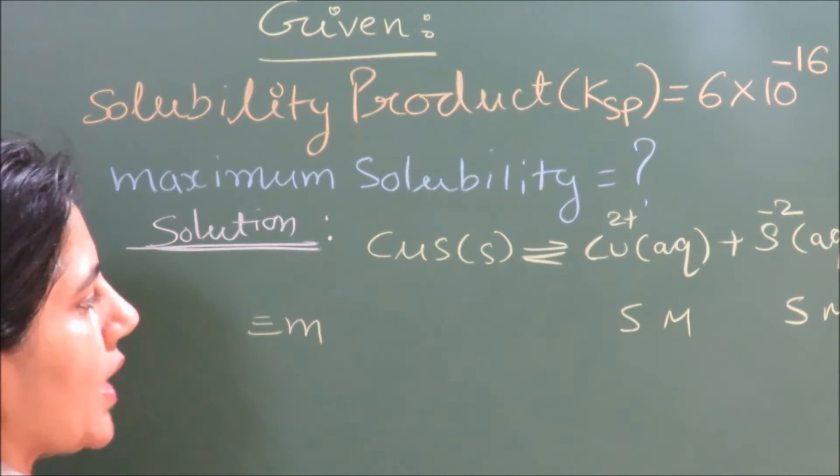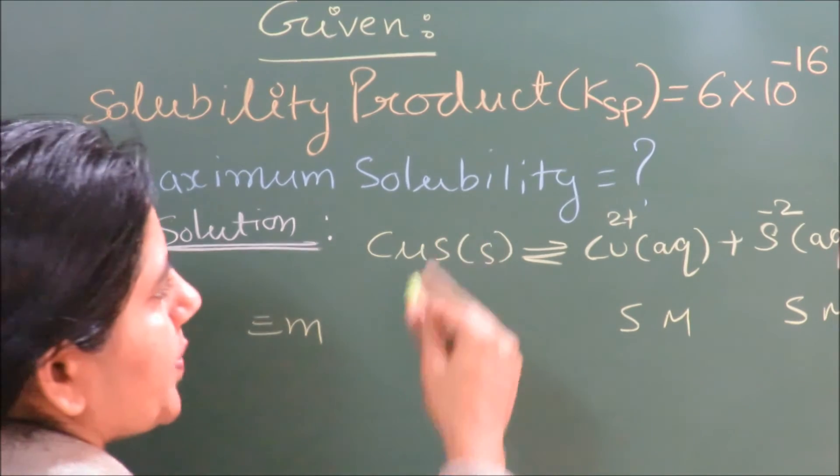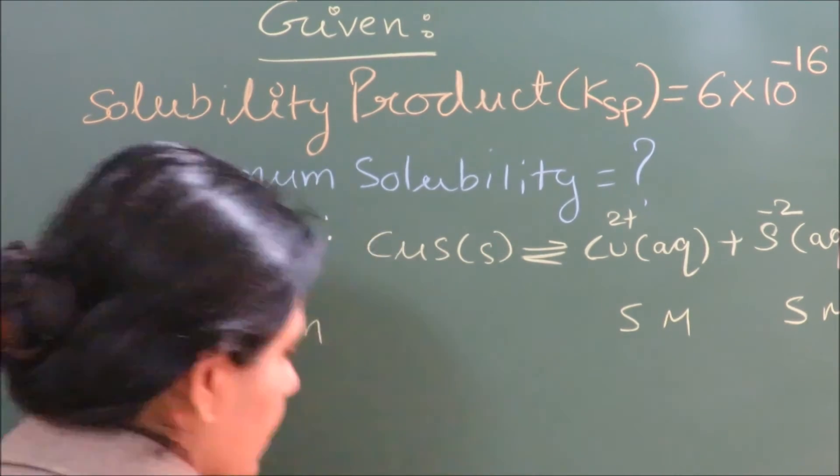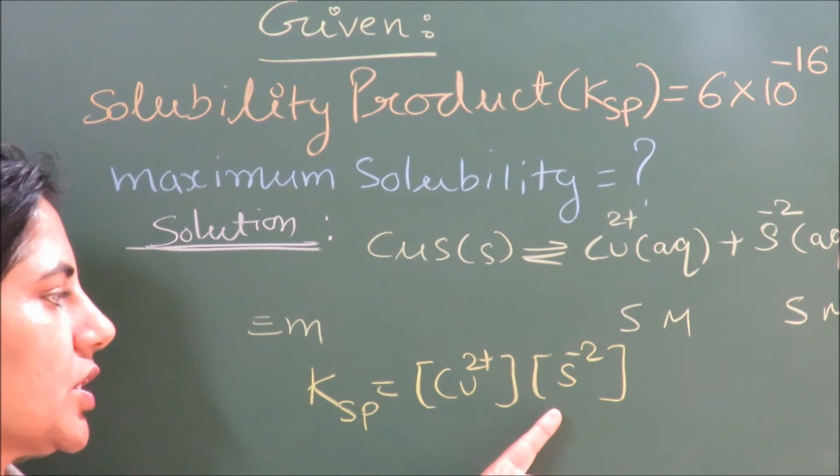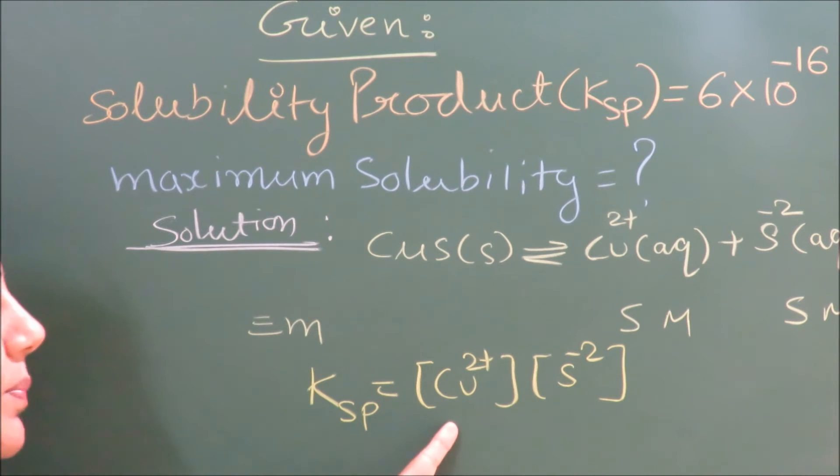Now the expression for Ksp, the solubility product for CuS, is copper ion concentration times the sulfide ion concentration. We will place the values at the stage of equilibrium.